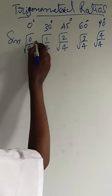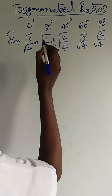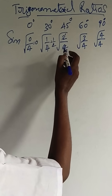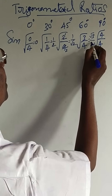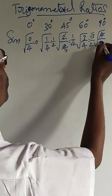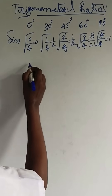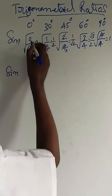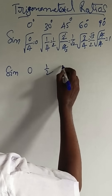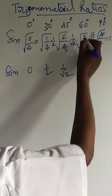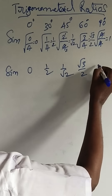We can simplify: 0 by 4 is equal to 0, square root of 1 is equal to 1, square root of 4 is equal to 2. So the sin values are: sin 0 is equal to 0, sin 30 is equal to 1 by 2, sin 45 is equal to 1 by root 2, sin 60 is equal to root 3 by 2, sin 90 is equal to 1.